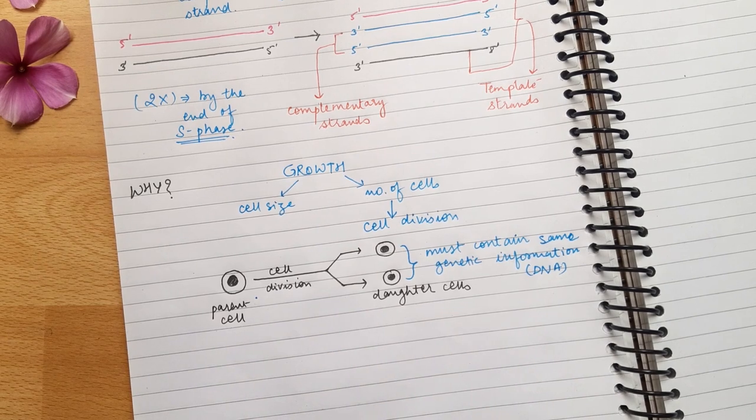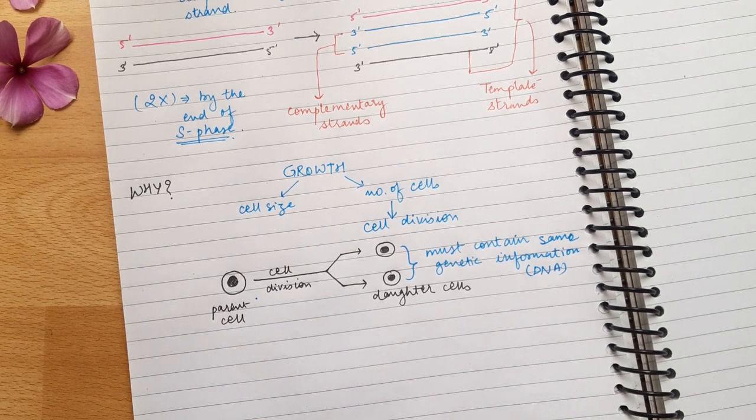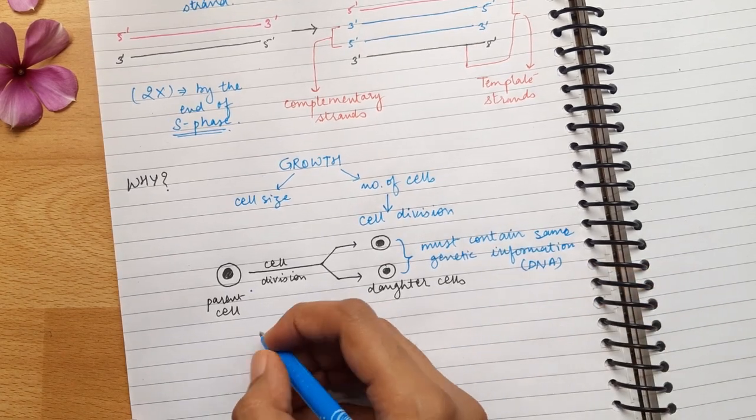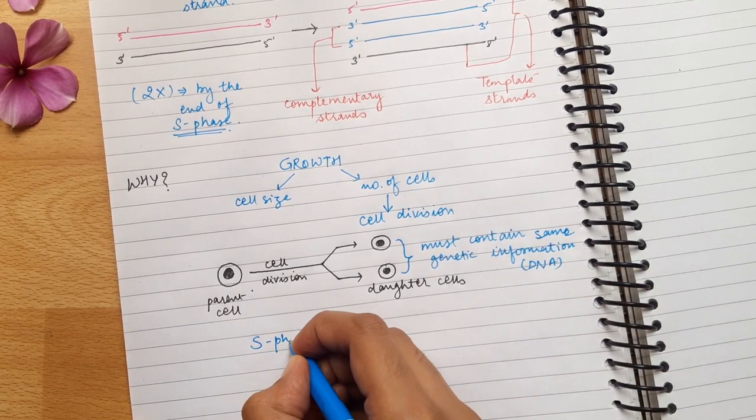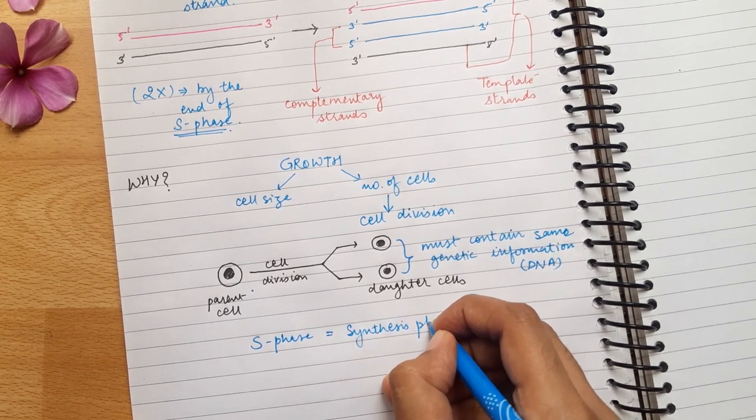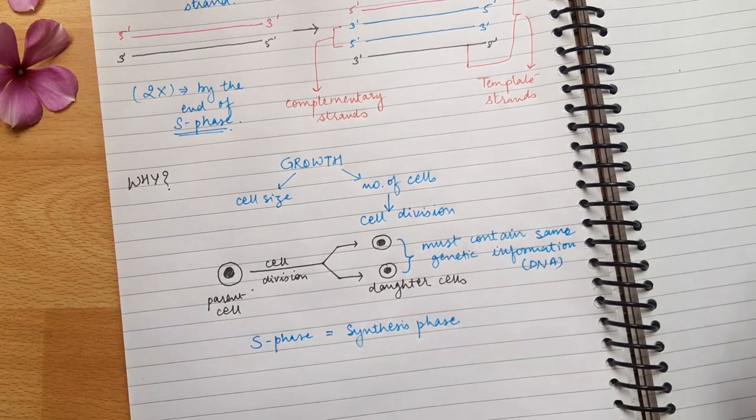Now there are many phases in a cell cycle G0, G1, M phase, but there is only one phase in which replication of DNA takes place and that is the S phase or the synthesis phase, because in this phase, duplicated DNA is synthesized.